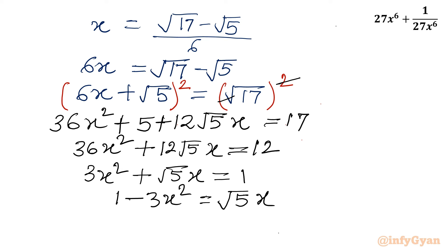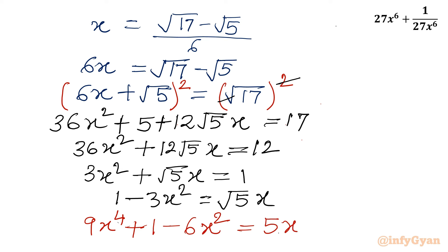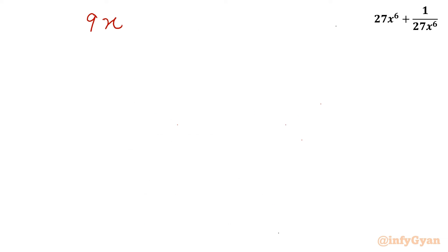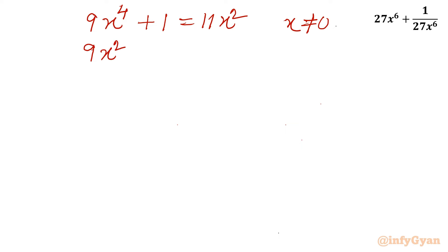Now I will square once again, using the (a − b)² identity. This equation will convert to 9x⁴ + 1 = 11x². Let me write here: 9x⁴ + 1 = 11x². Because x is nonzero, I will divide this equation by x². So I will be writing 9x² + 1/x² = 11.